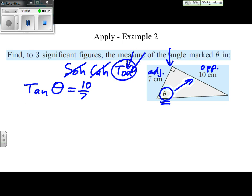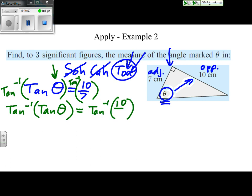Our goal is to get our variable alone. What is keeping theta from being alone? The tangent. Similar to what we did when we had a sine, we need to undo tangent. What function undoes tangent? Inverse tangent, and that again is tangent to the negative 1. The inverse tangent of tangent of theta is equal to inverse tangent of 10 sevenths. The inverse tangent cancels out the tangent, leaving just theta behind.